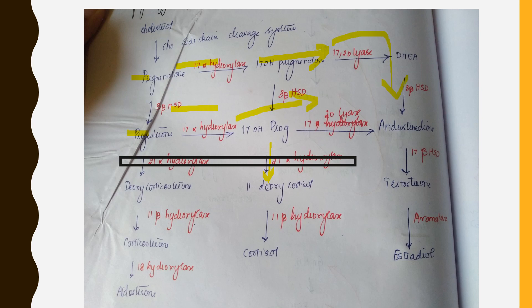There will be almost nil aldosterone — so sodium and water are lost, resulting in dehydration and shock. Potassium gets retained, causing hyperkalemia and arrhythmias. There will be no cortisol, leading to hypoglycemia which also contributes to shock. Sex steroids accumulate — DHEA, androstenedione, testosterone — and because of this a female child will have virilization and present at birth with ambiguous genitalia.